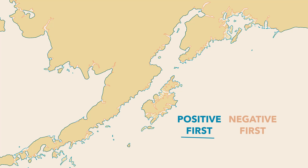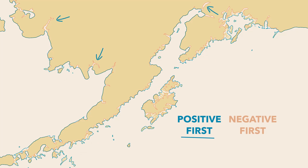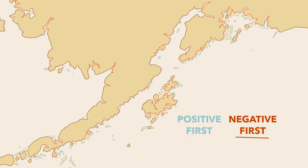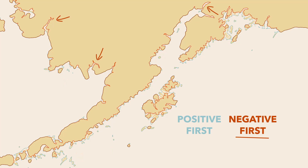Positive first will give you a more inclusive result — complex edges just get absorbed into the blob, and it's friendlier to islands. Inlets and donut holes, however, will get filled in. Applying the negative offset first gives you a more exclusive result — complex edges are just chopped right off, all those little islands sink, but it's very friendly to inlets and donut holes.